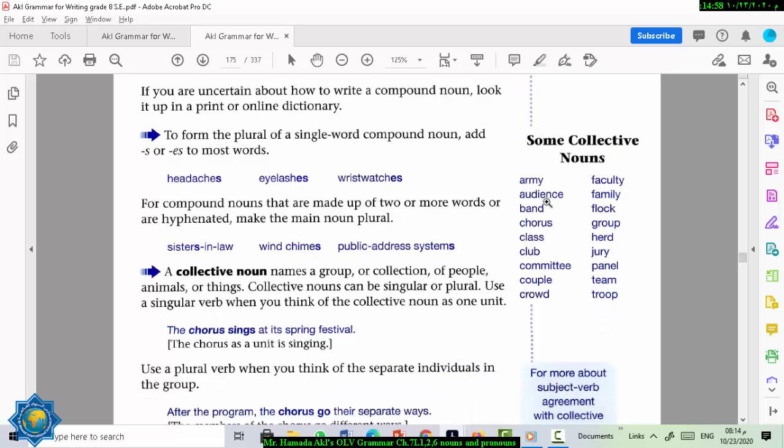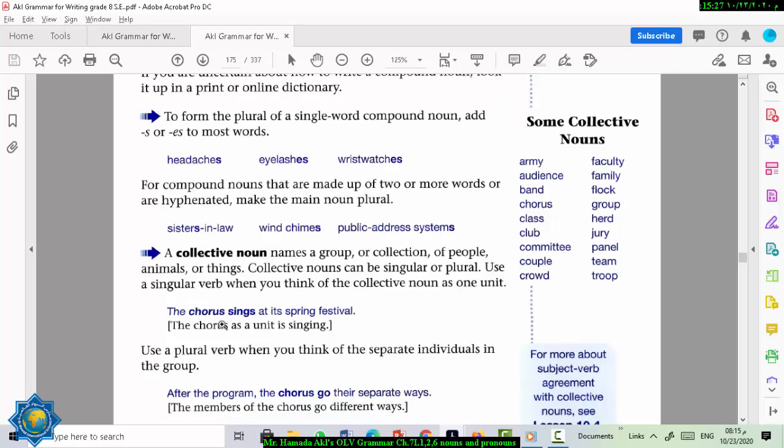Some examples of collective nouns are army, faculty, audience, family, and so on. So based on these examples, what do you think are collective nouns? Collective nouns, they name a group or collection of people or animals or things. Collective nouns can be singular or plural.